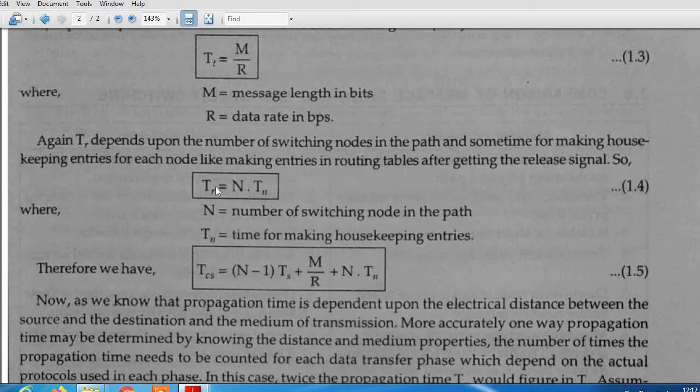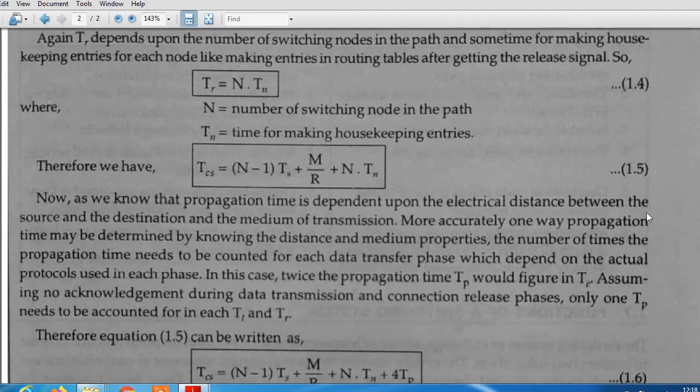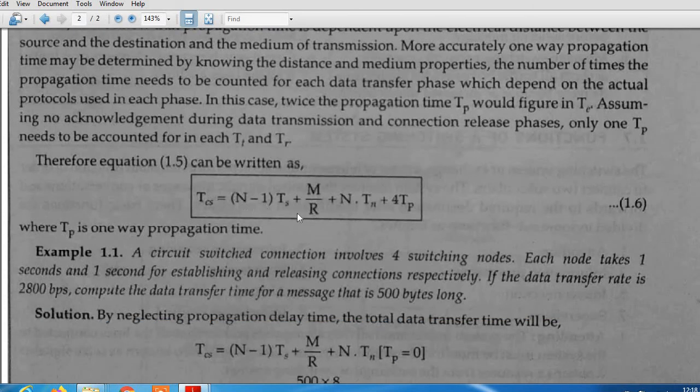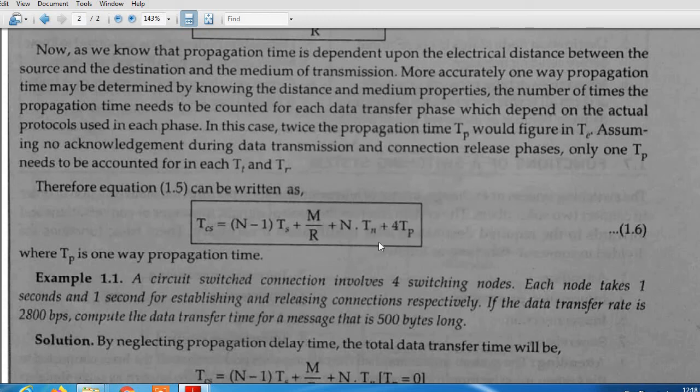If we summarize all this, then we can establish the relationship: total time equals (N-1) times Ts plus M/R plus N times Tn. There is actually some propagation time also needed for the physical distance between source and destination and the medium of transmission. If we introduce this propagation time, then our formula will be Tcs equals (N-1)Ts plus M/R plus N times Tn plus 4 times Tp.